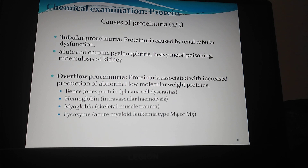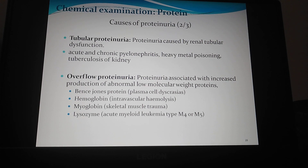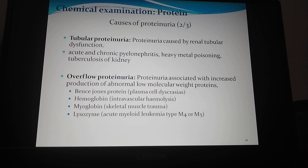Tubular proteinuria is caused by renal tubular dysfunction. Causes of renal tubular proteinuria are acute and chronic pyelonephritis, heavy metal poisoning, and tuberculosis of the kidney.